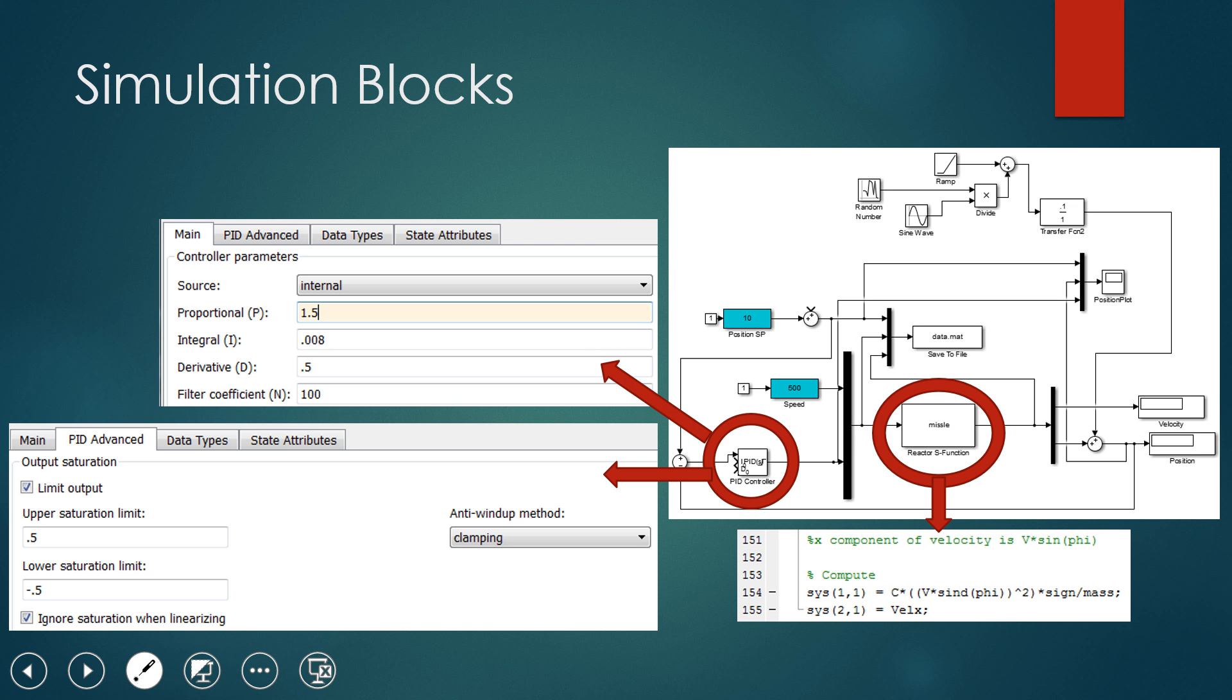We used Simulink to create a model for our system. Now, it looks a little bit complicated, but it's really only one feedback control loop. Two key elements of this system here are the S function, which takes, it actually uses the equations of motion and force from the previous slide and generates outputs from that, and the PID controller here.